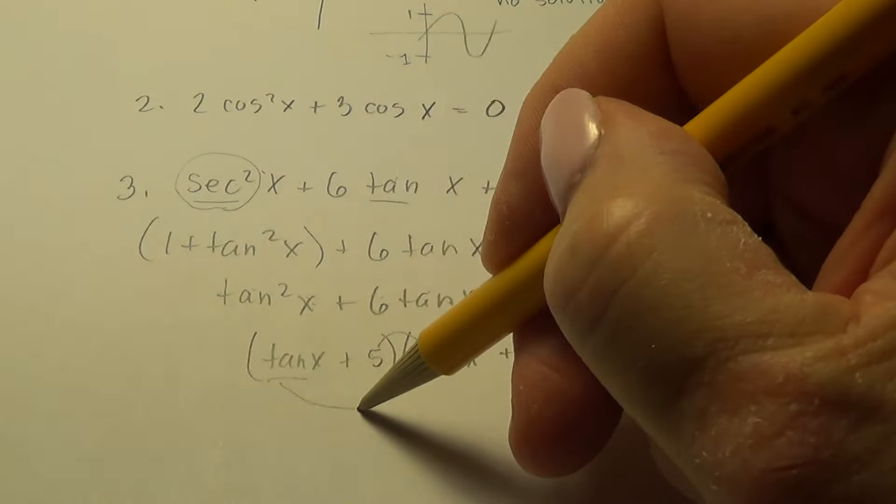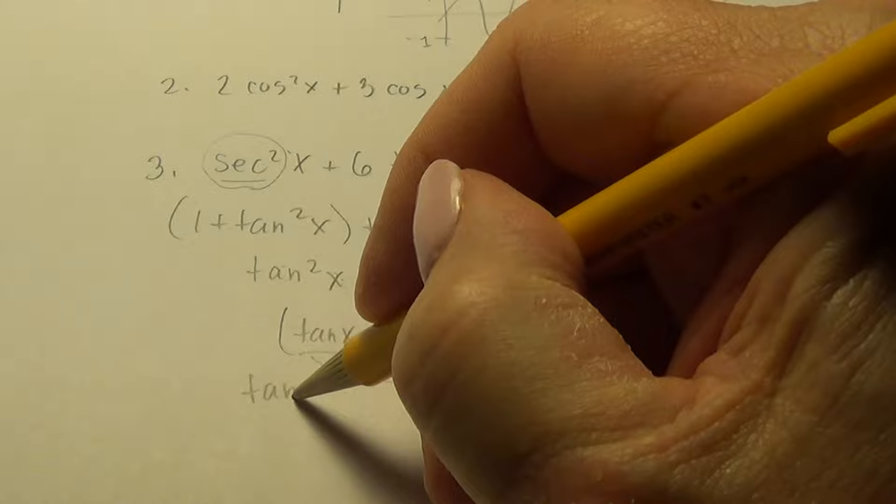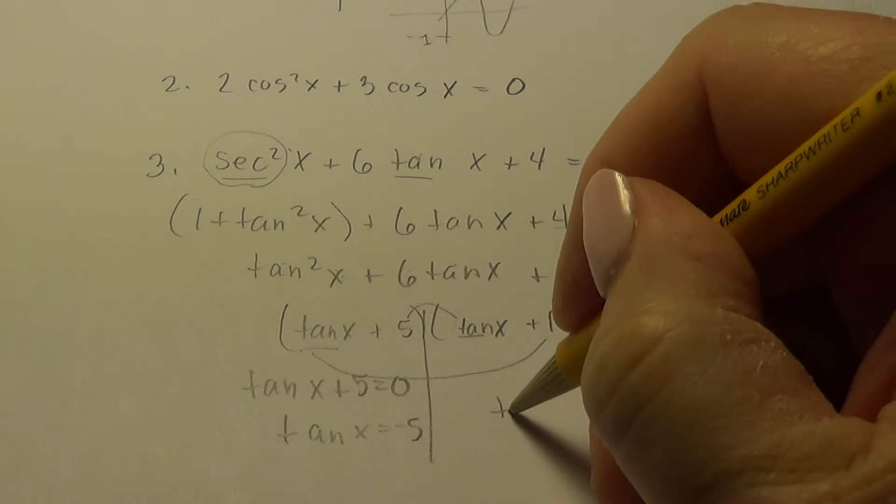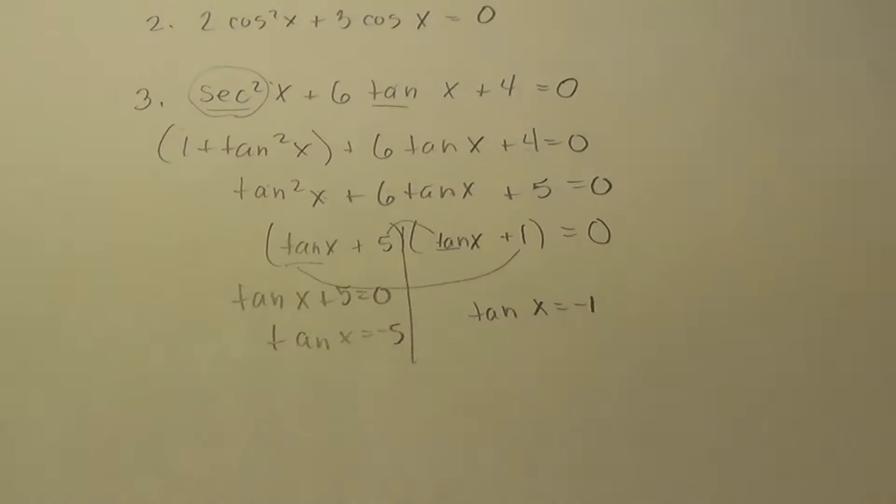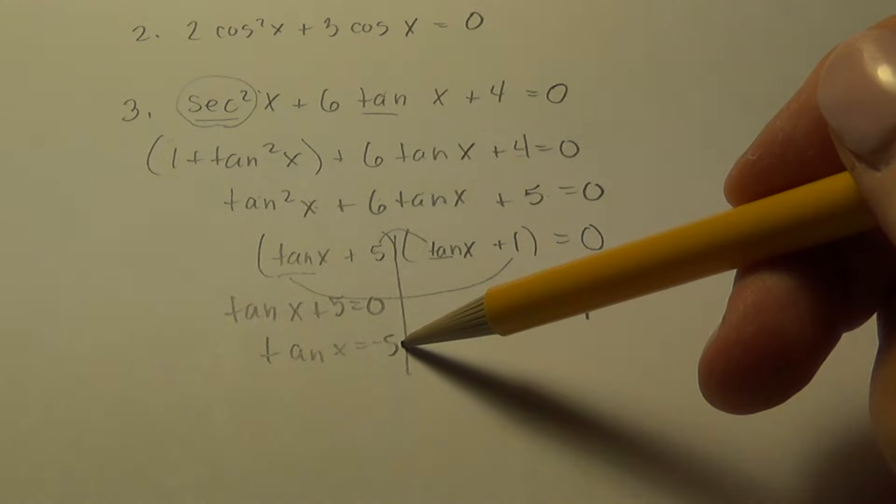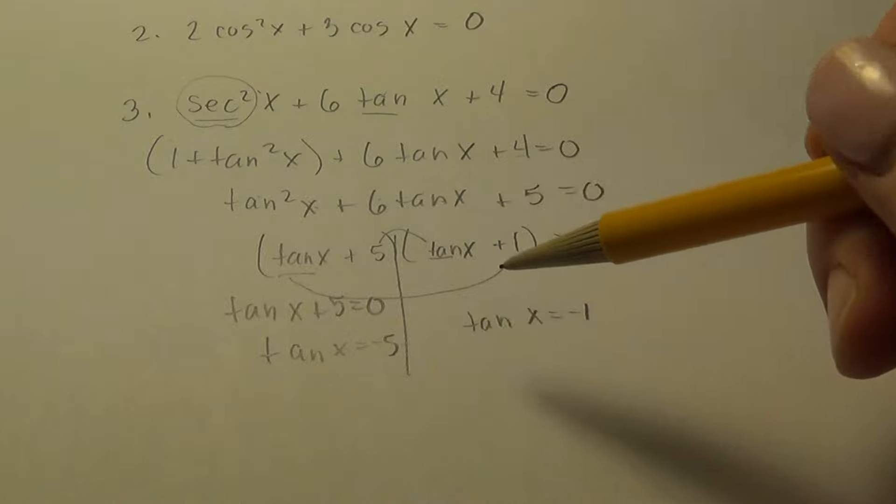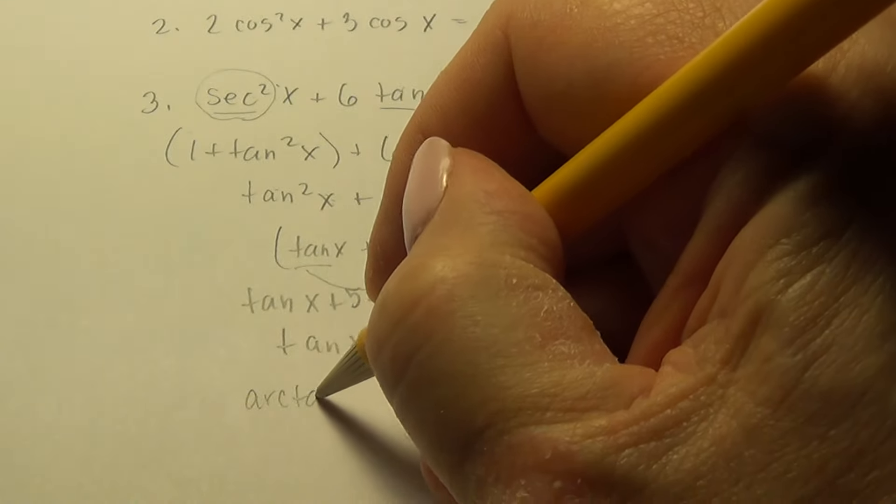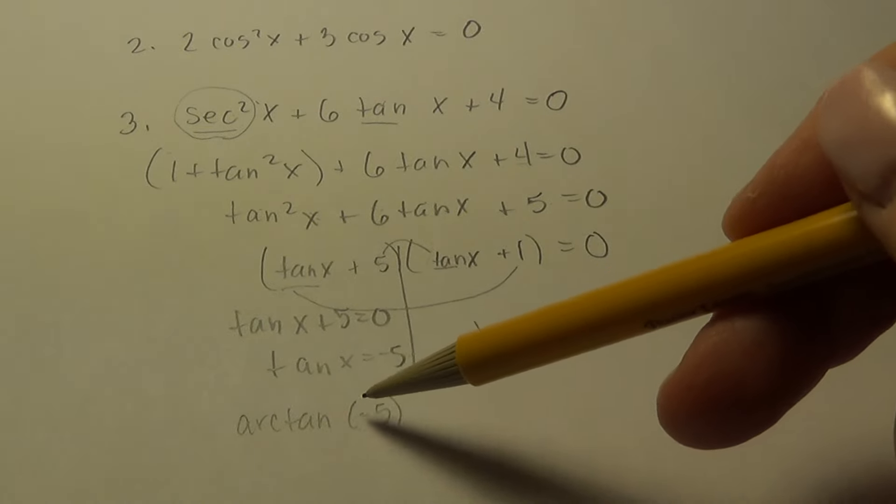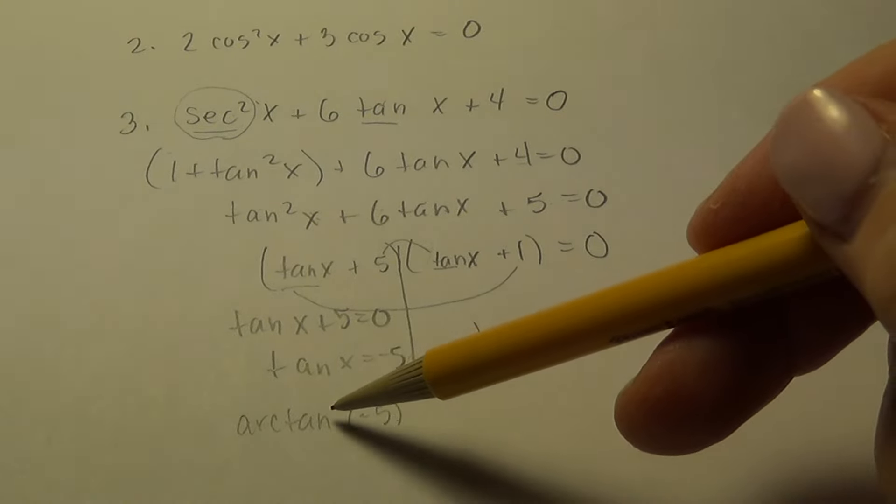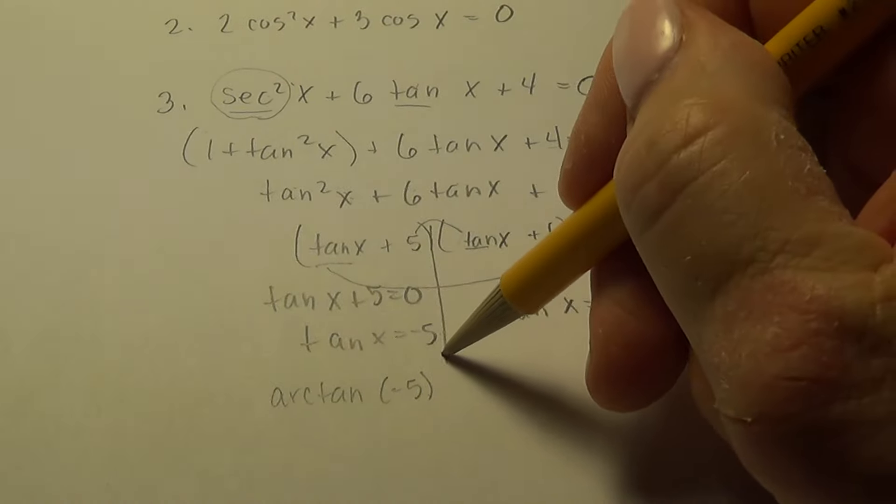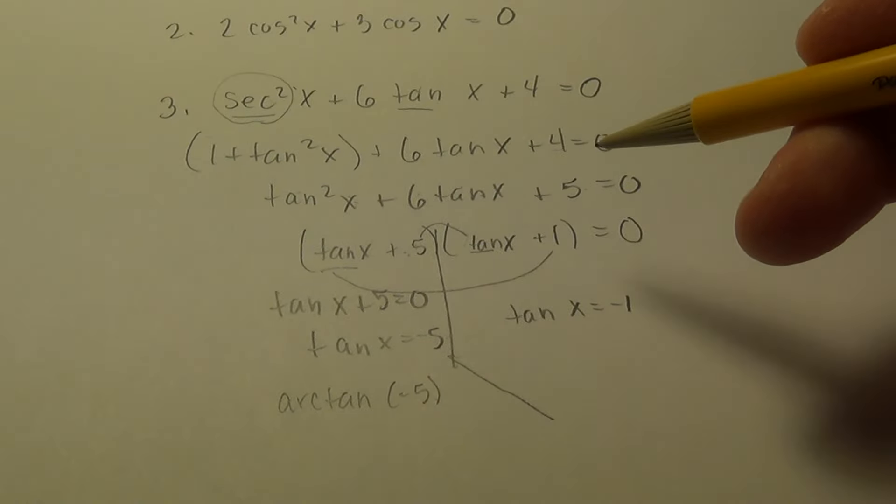So we factored it so that we can check each branch. Set equal to 0. And then we get tan x = -5 on this branch. And tan x = -1. Now, on the unit circle, we don't have any second coordinates divided by first that are going to give us a -5. So we pull that other trick that we learned. When it's not on the unit circle, we have an expression. And it is arctan(-5). That tells the reader that this is the angle that has -5 as its tangent.